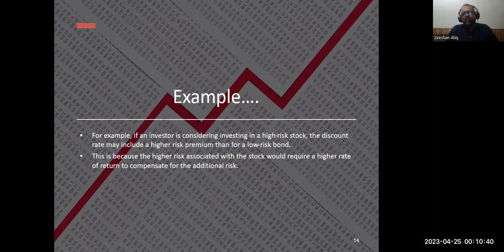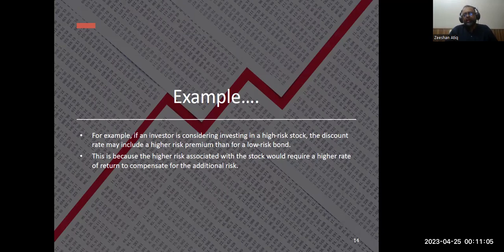In this lecture, we have learned about the time value of money and the present value of money. When we make investments, we should always compare the opportunity cost of that investment — the other ways you could invest the money and what returns you could get elsewhere. The risks you take also reduce the value of your future money. To sum up, the time value of money explains why money loses its value over time due to uncertainty, inflation, and the interest income lost on those investments. Thank you for joining us.